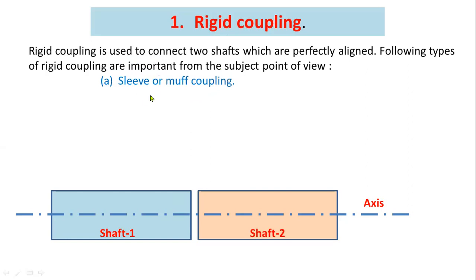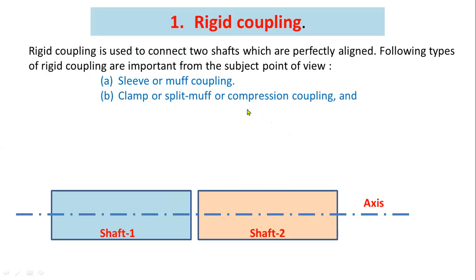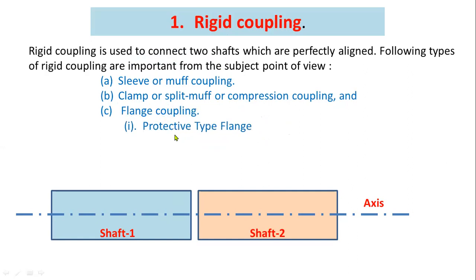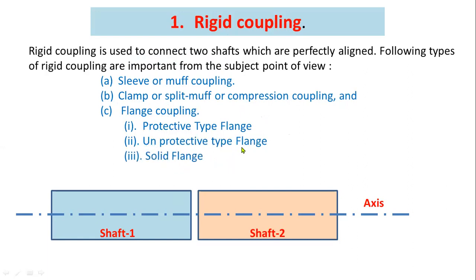Types of rigid couplings include: sleeve or muff coupling; clamp or split muff coupling, also called compression coupling; and flange coupling, which is further divided into protective type flange coupling, unprotective type flange coupling, and solid flange coupling. These are all examples of rigid couplings.